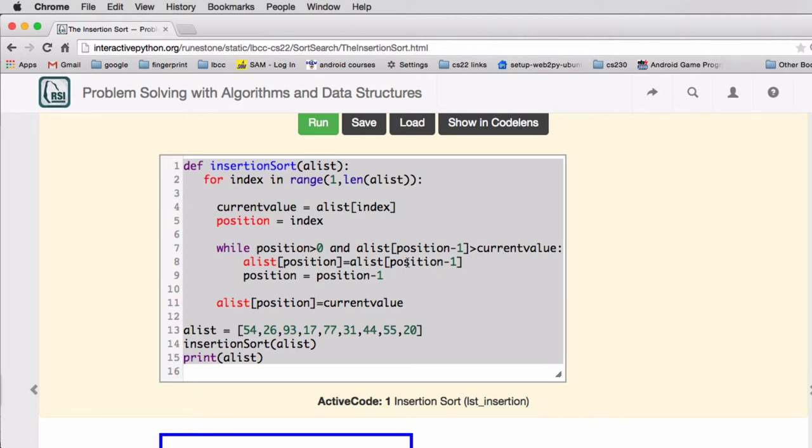So then we set the value in position minus one into the position, so that's going to move position minus one to the right. And then it's going to decrement position and loop again.